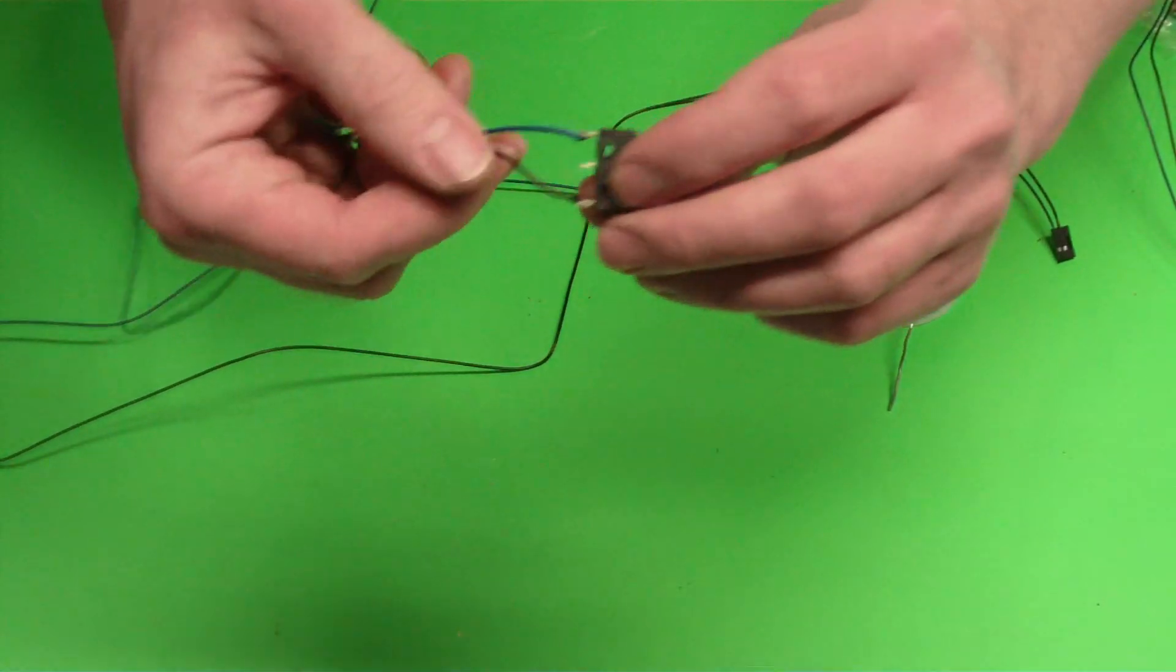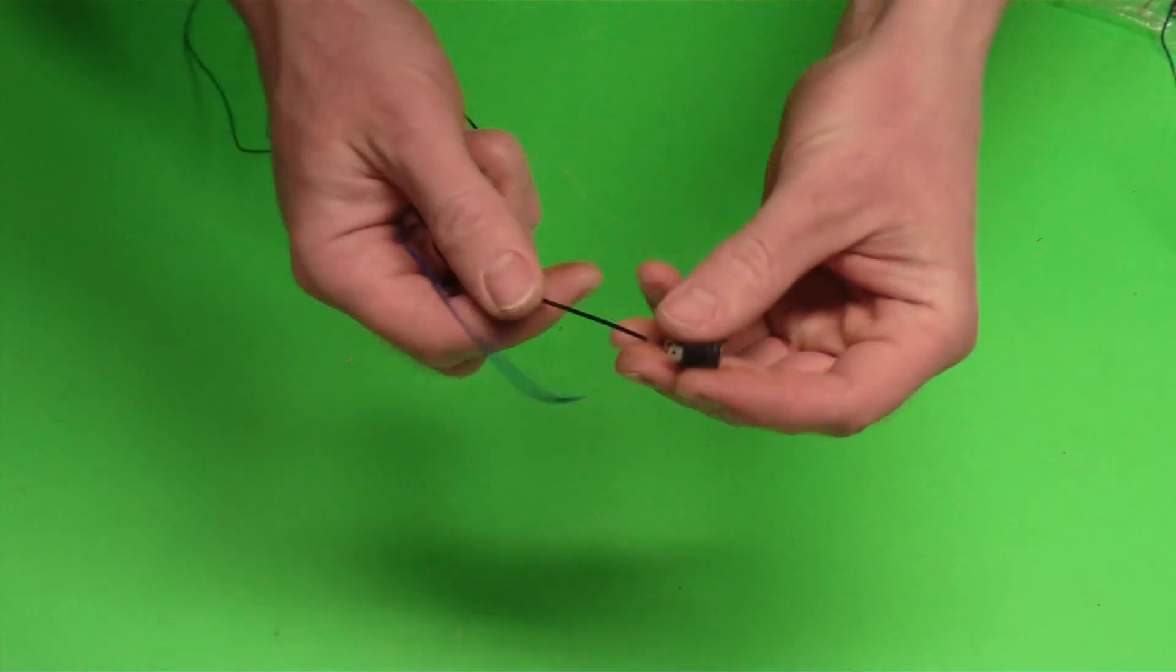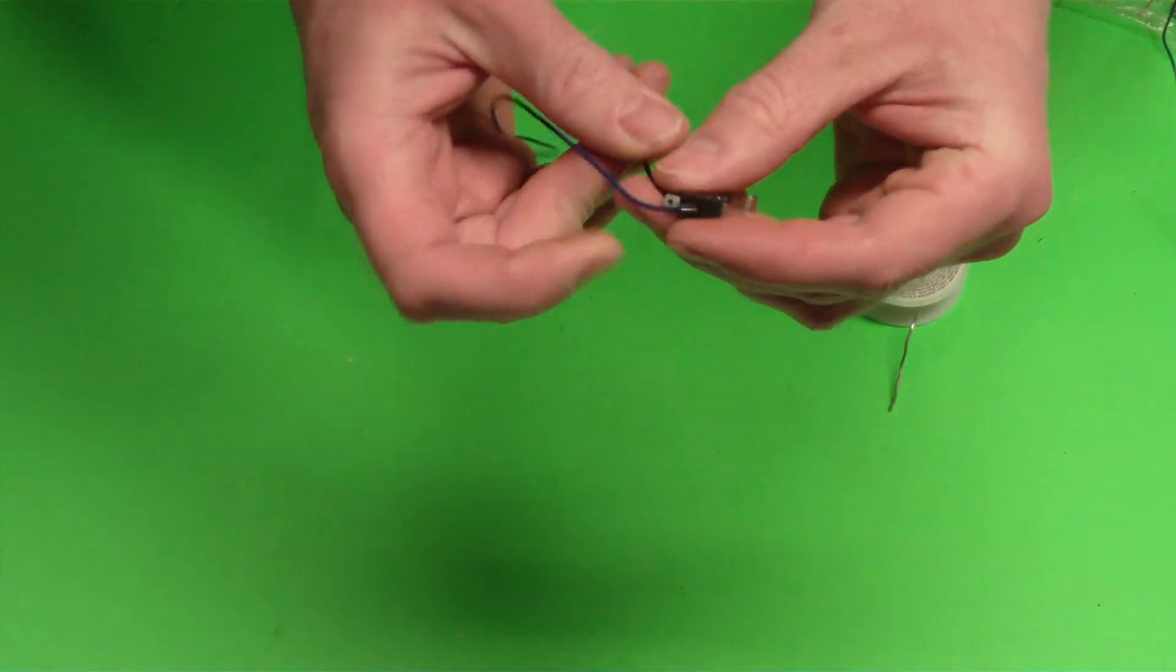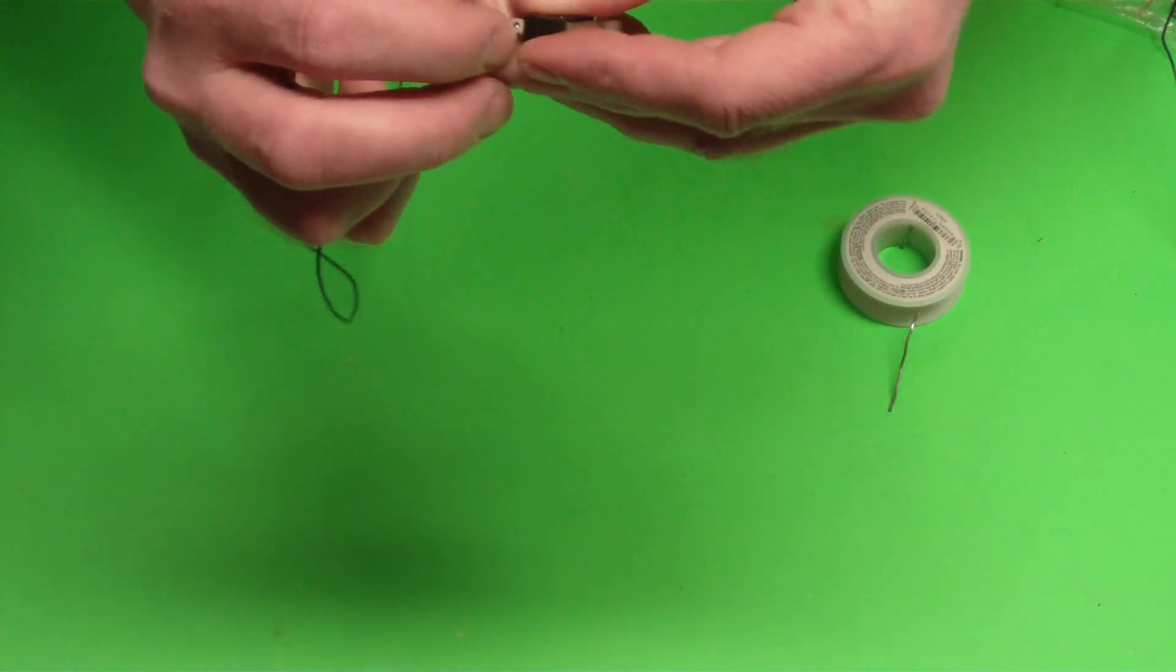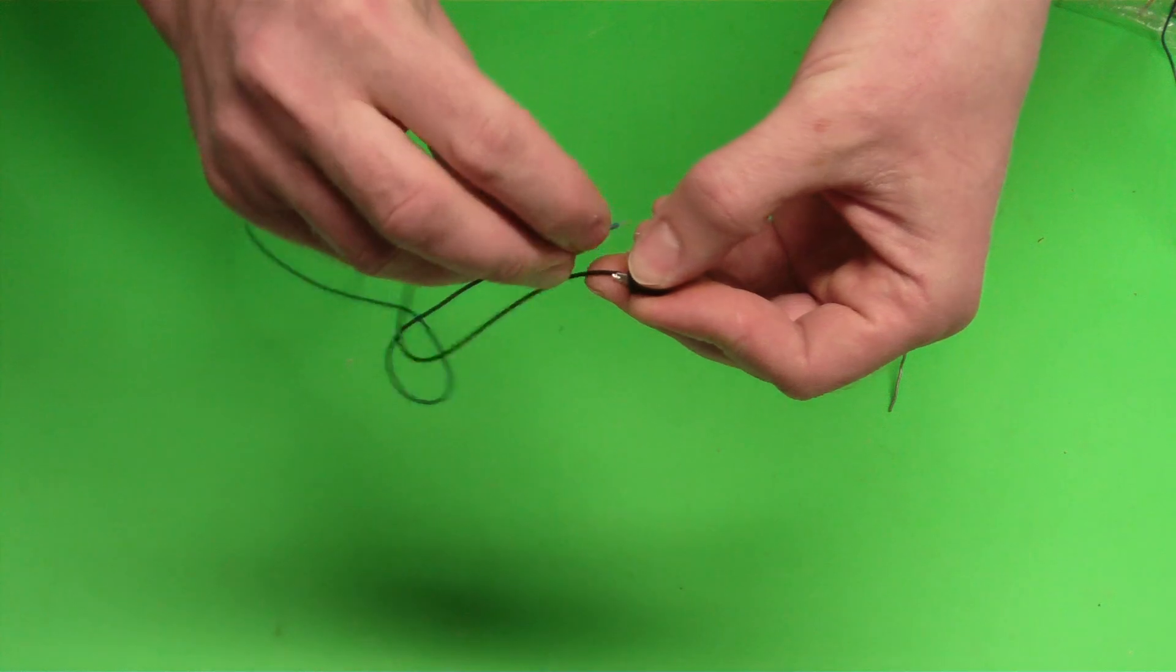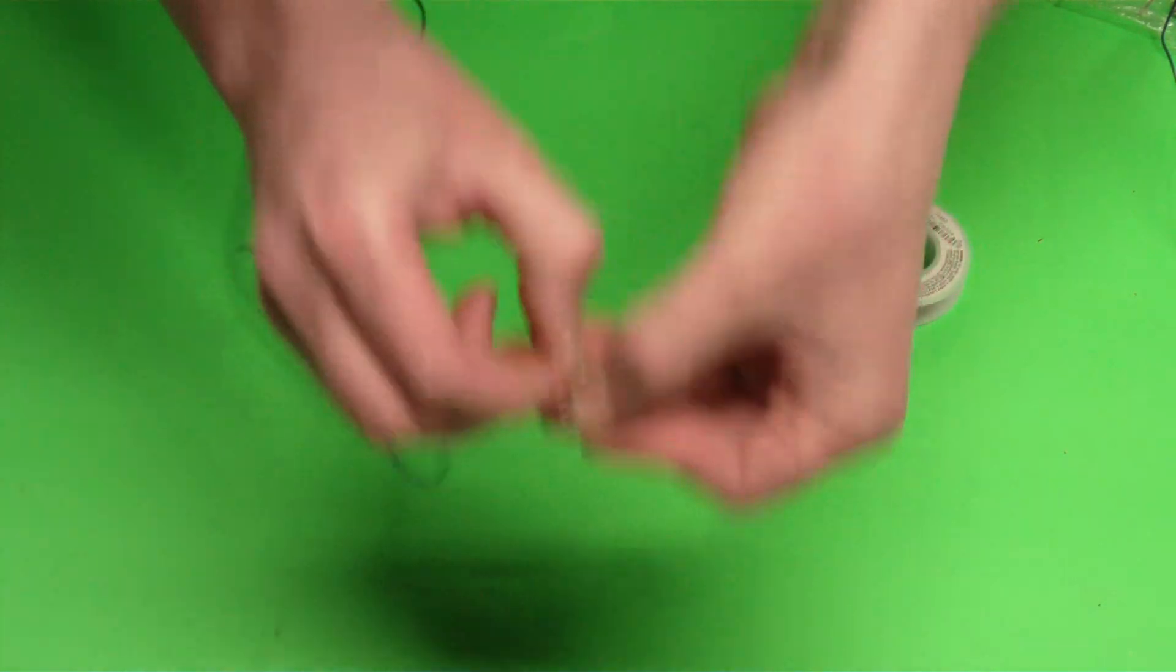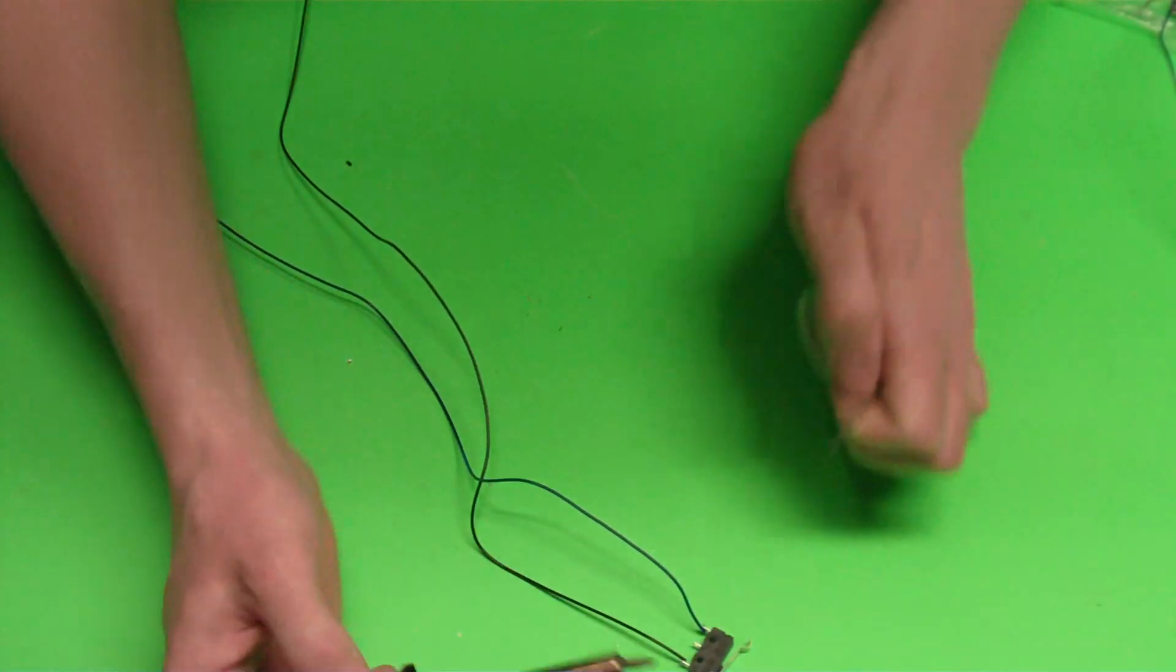When you're doing this, one thing you want to make sure is that you don't hold the soldering iron on the switch leg for too long. If you hold it there for a long time it can actually melt the switch and then your switch won't work. So you just do it as short of a time as you possibly can.